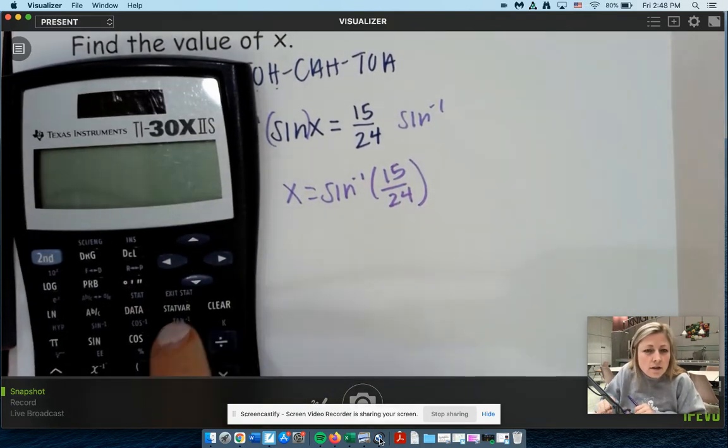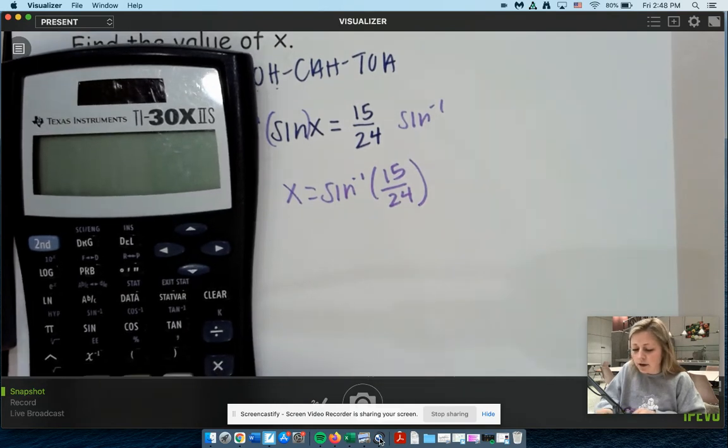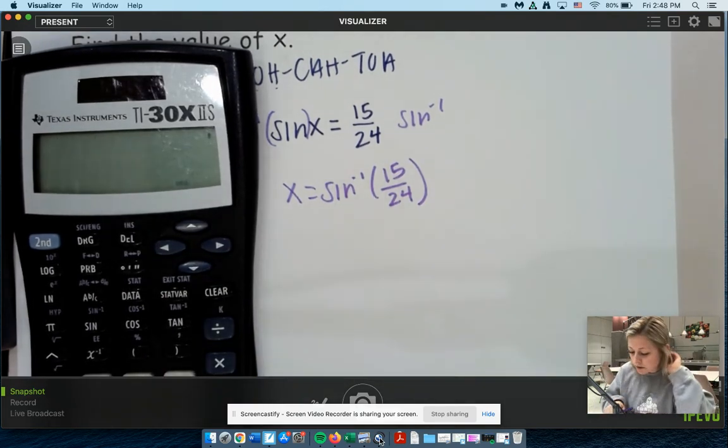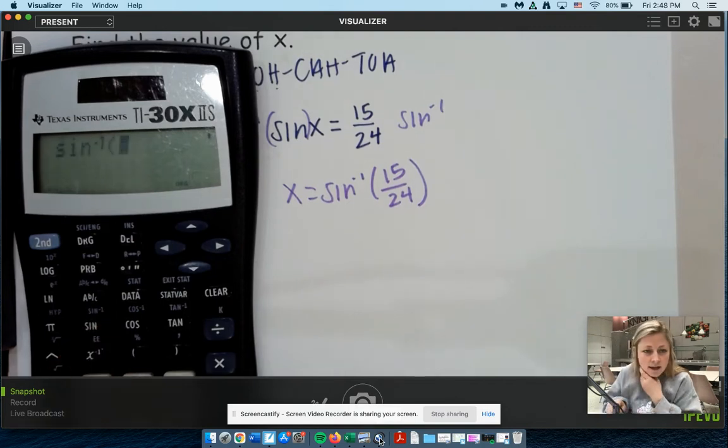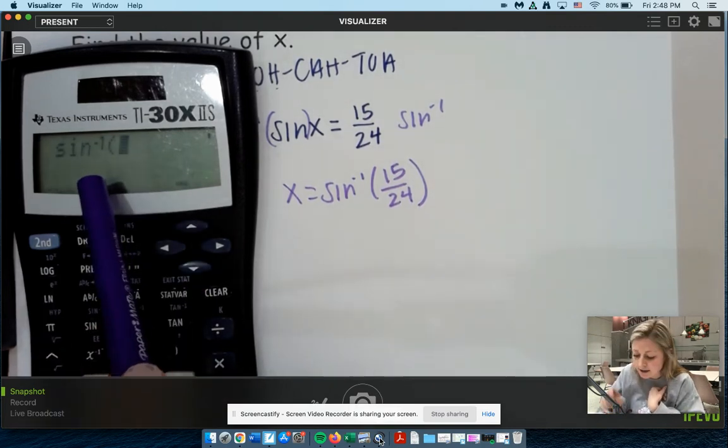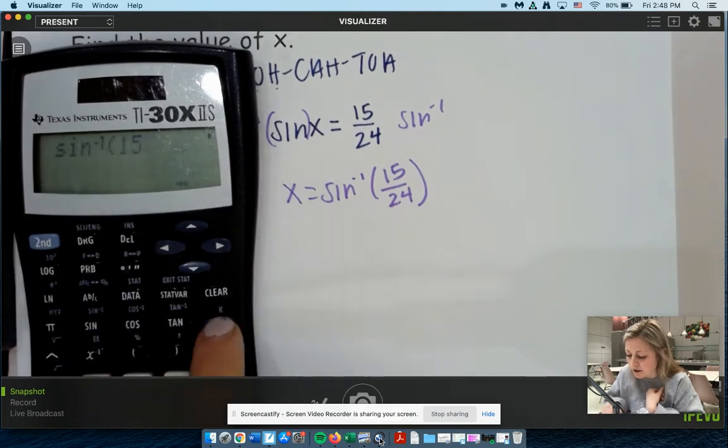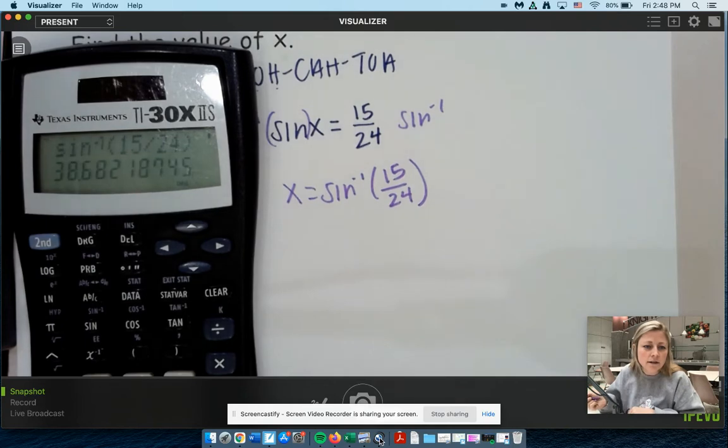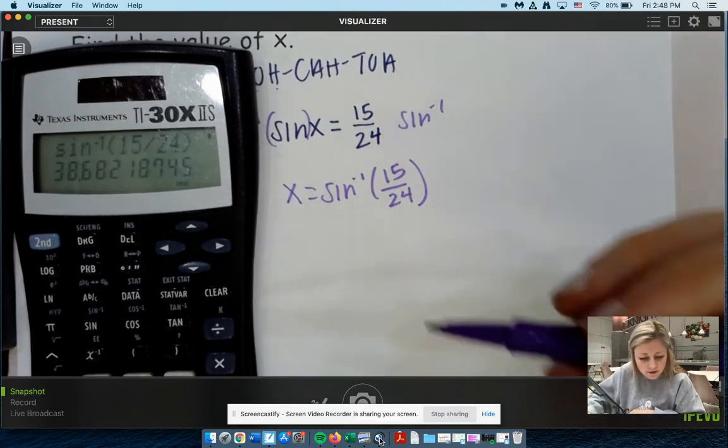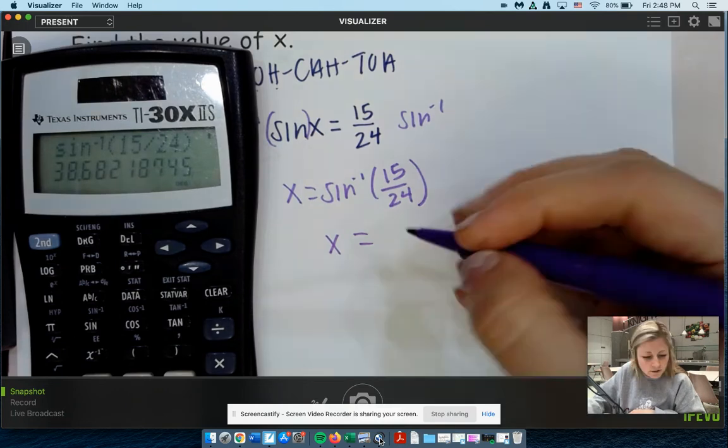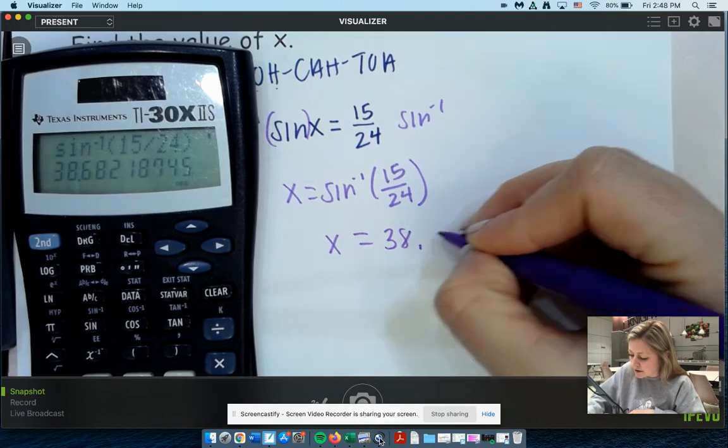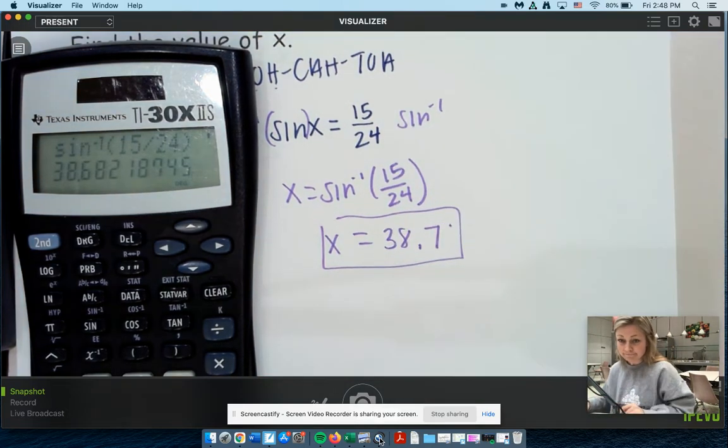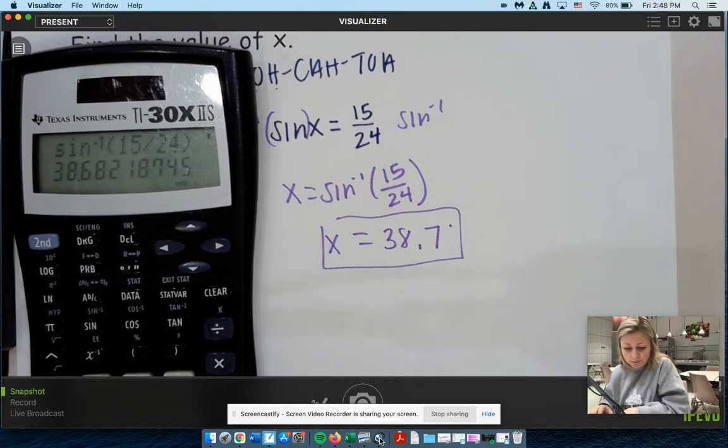So you're going to hit second. And now since we're using the sine inverse, do you see how it's a sine negative one over sine? So hit that. And now we'll have the negative one on your calculator. And then your ratio, 15 divided by 24. End your parentheses. Hit enter. And we just found that angle to be 38. What are we rounding to? Does it say? Nope. We'll go to one decimal place. 38.7 degrees. That's it today, folks. That's what we're doing.